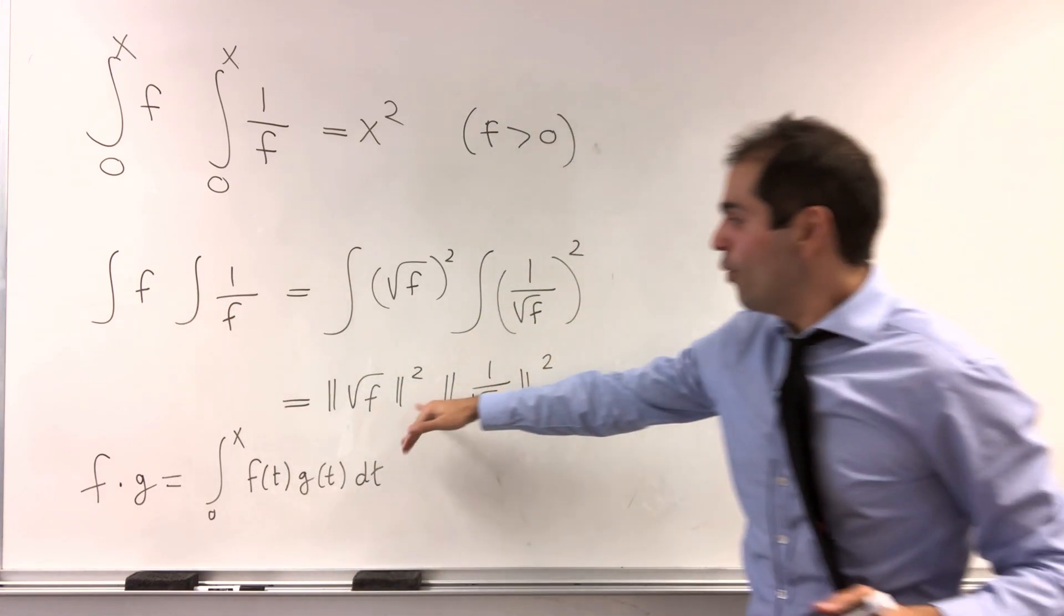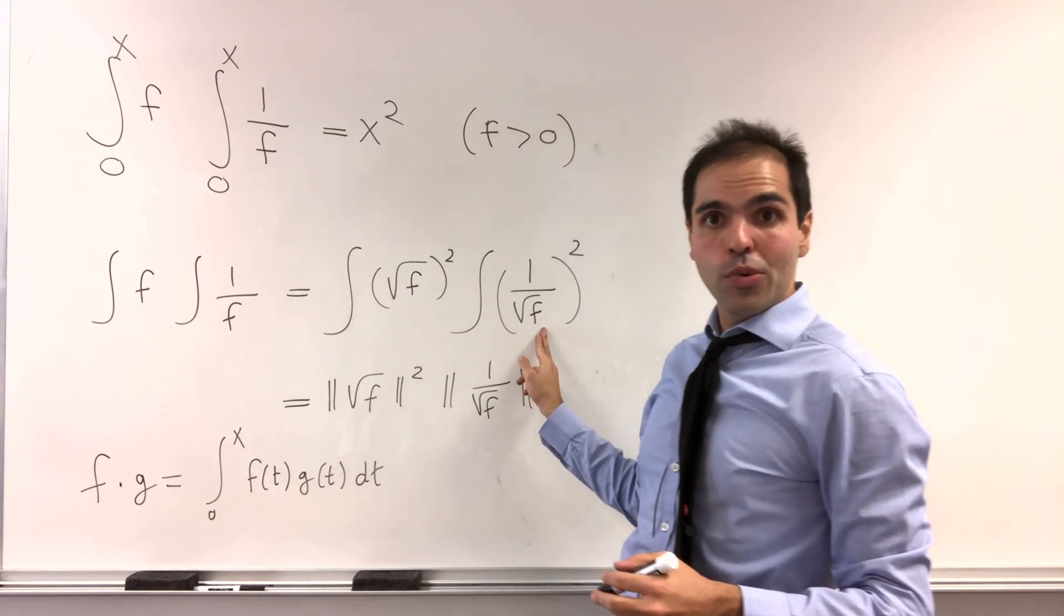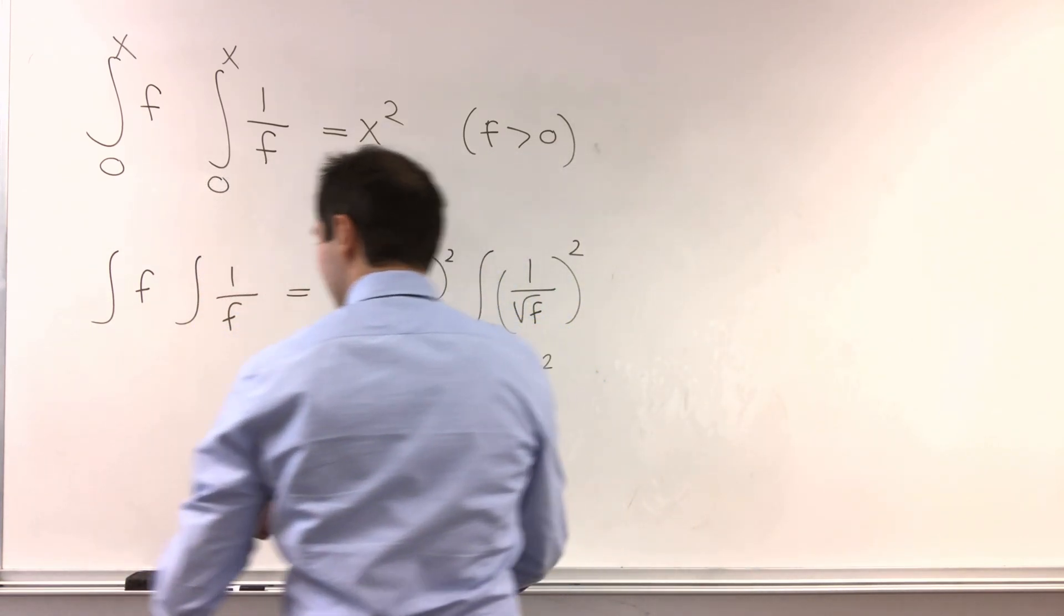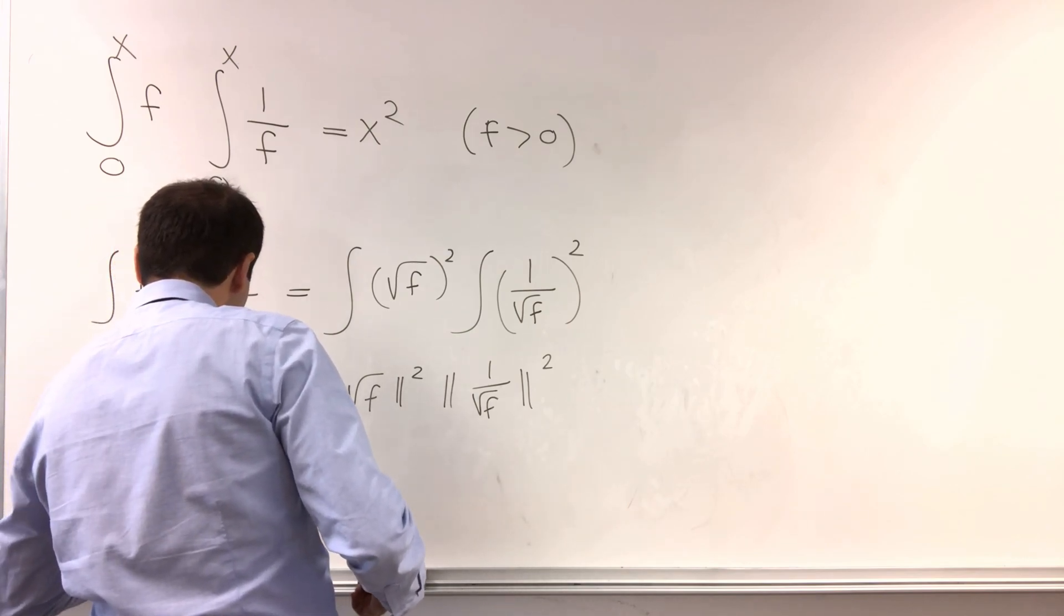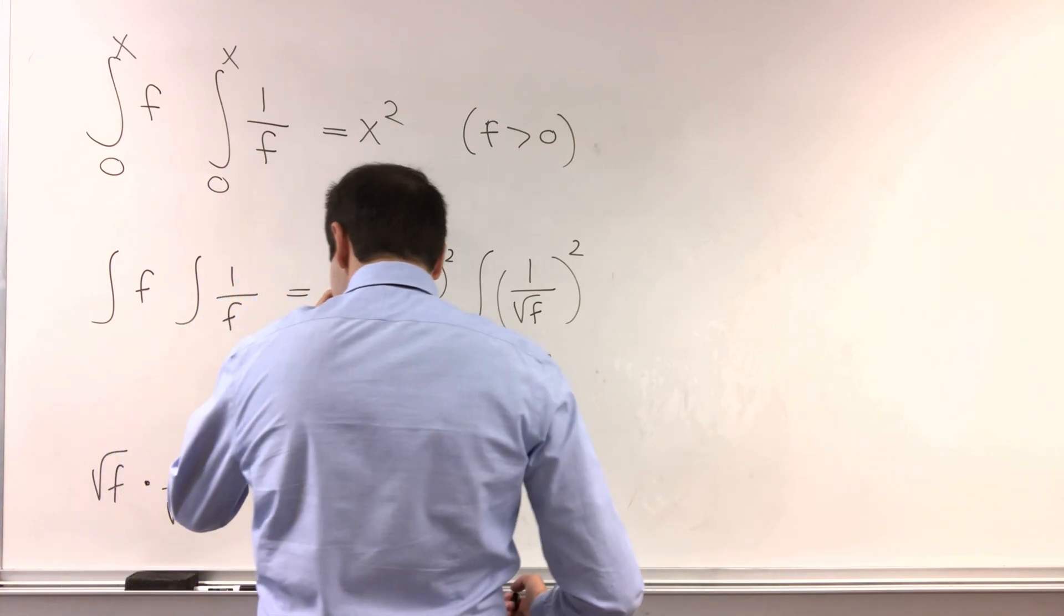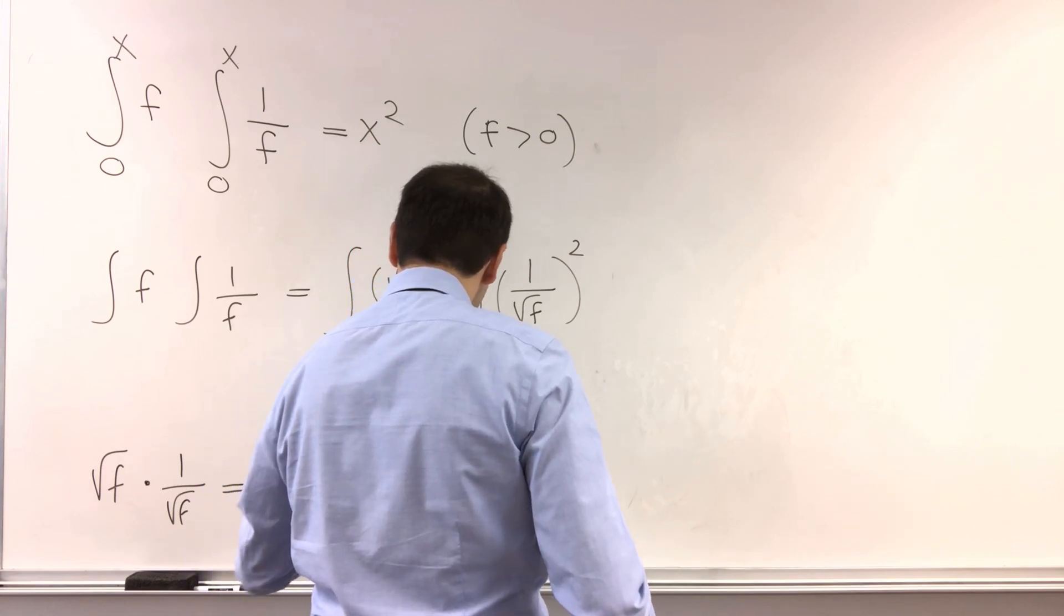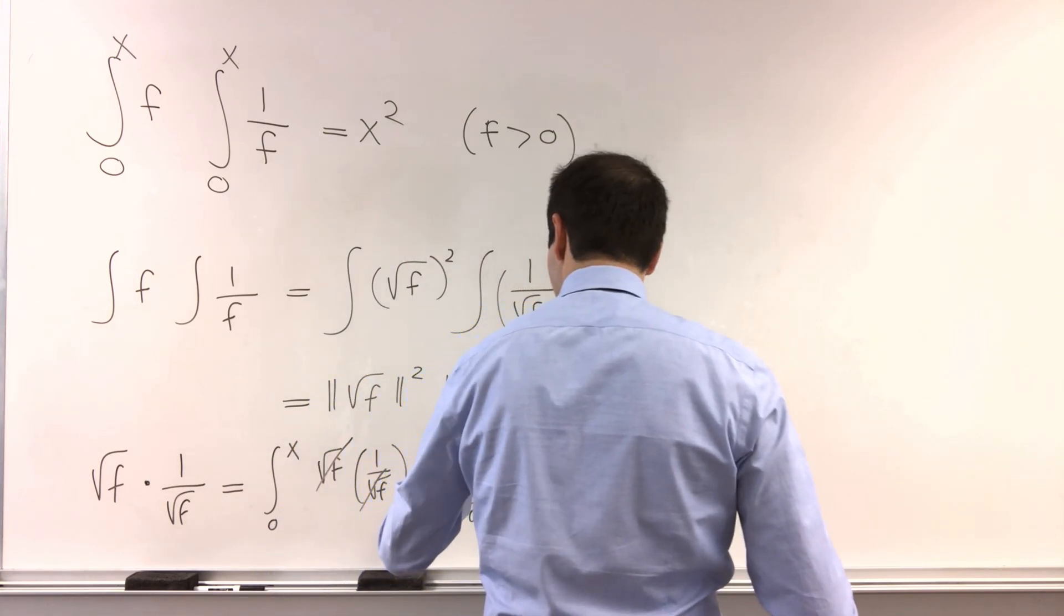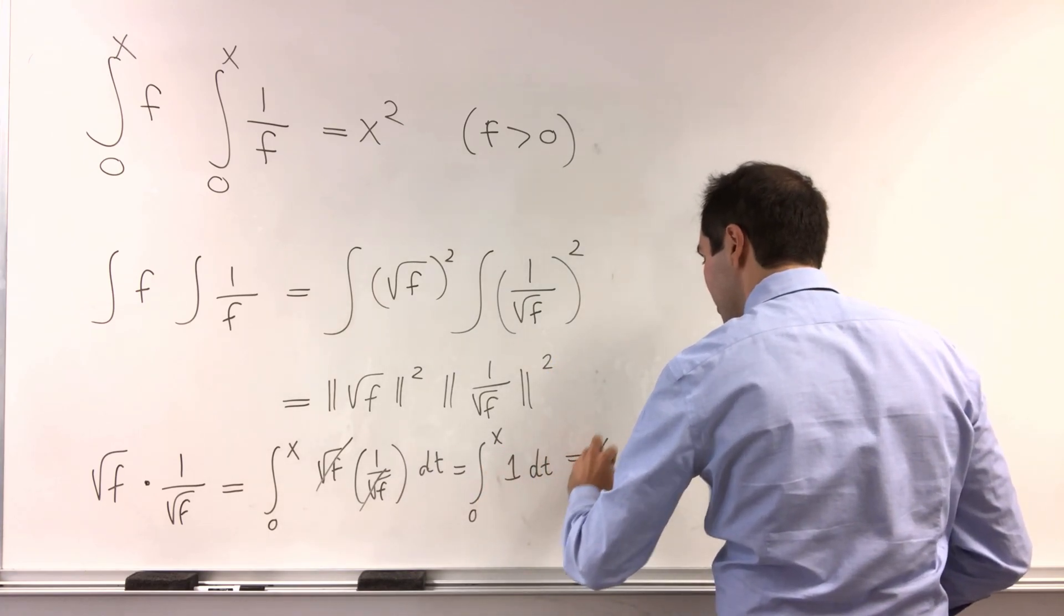Okay, so on the one hand, we have this. On the other hand, let's try to find a dot product of square root of f and 1 over square root of f. Well, it's integral from 0 to x of square root of f times 1 over square root of f dt, which is integral from 0 to x of 1 dt, and the antiderivative is t, so we get x.